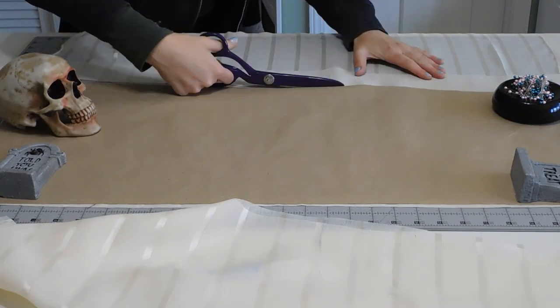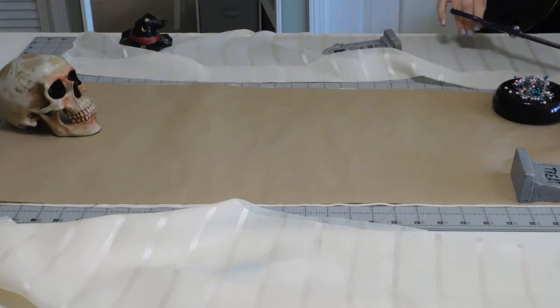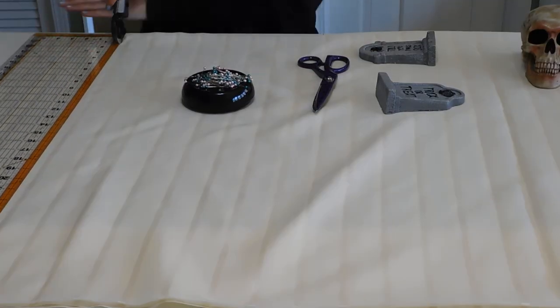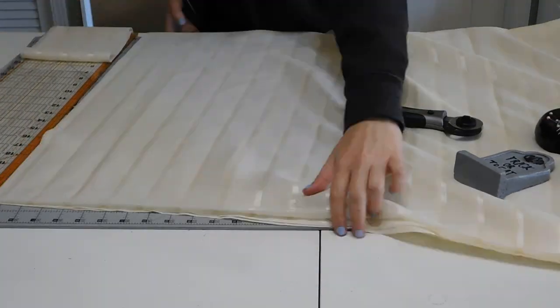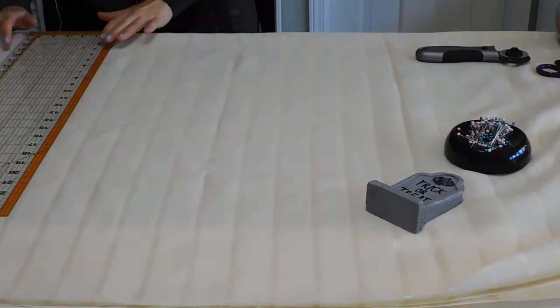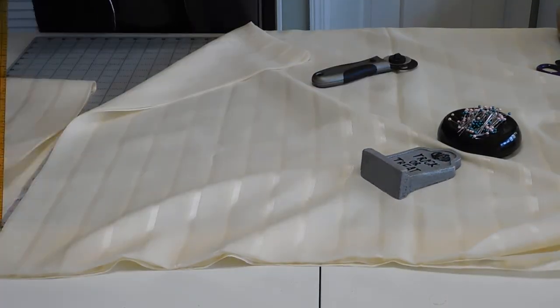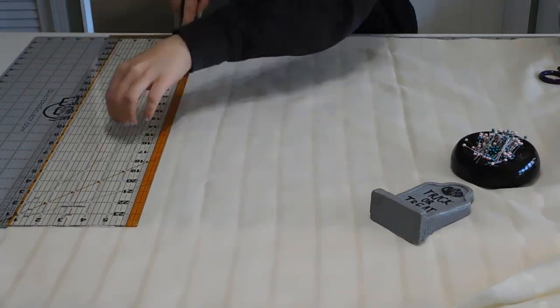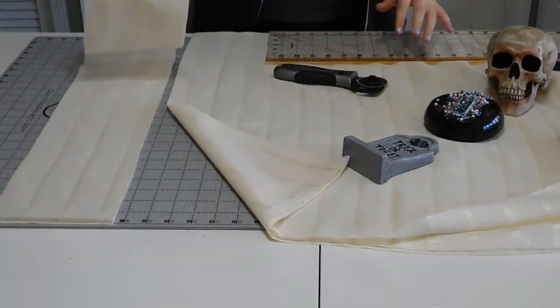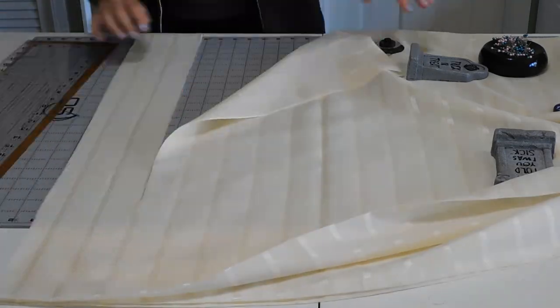Now it's time to cut my ruffles. My fabric was 120 inches wide and my ruffles were going to be 115 inches long so I just bumped it up to 120 and cut my pieces by measuring five and a half inches for the width and used my rotary tool to cut through all four layers of fabric at the same time.